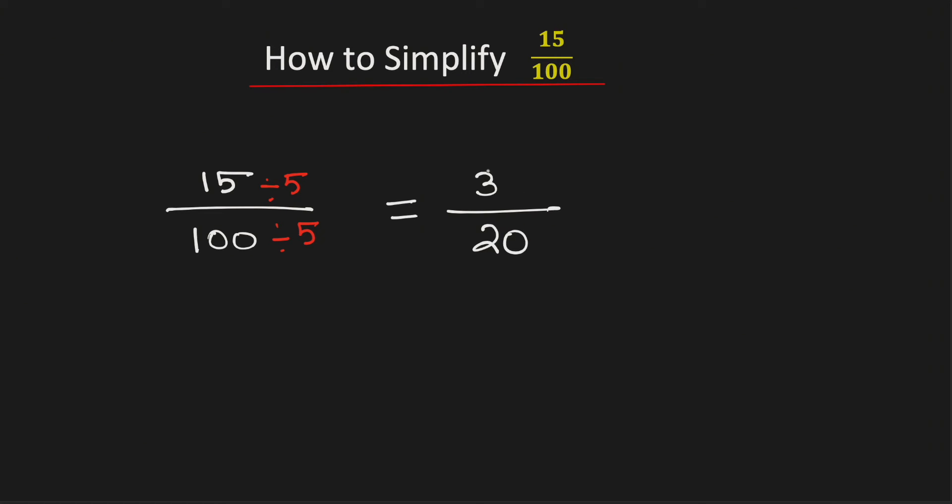Now we know that there is no number which can divide both 3 and 20 other than 1. So we can say that 3 over 20 is already simplified. Thus 3 by 20 is the simplified reduced form of the fraction 15 over 100 and this is our final answer.